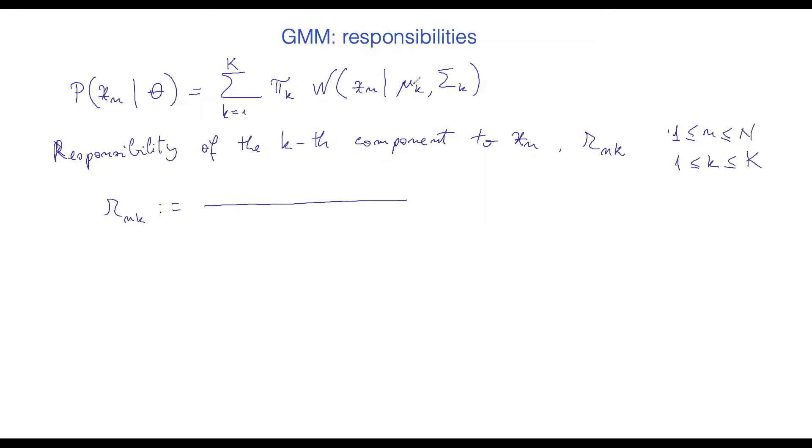so it's going to be exactly this component, it's going to be pi k times the normal distribution with mean mu k and covariance matrix sigma k over the whole sum, so that this is normalized over the whole thing. So this is from sum 1 to k pi j and normal distribution of xn given mu j and sigma j.